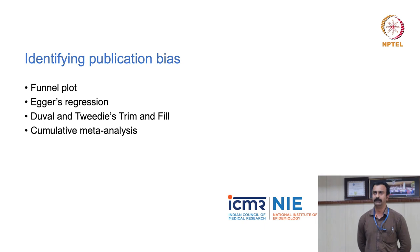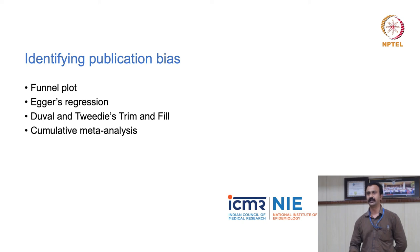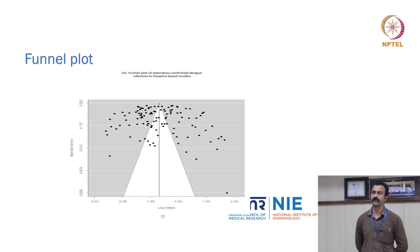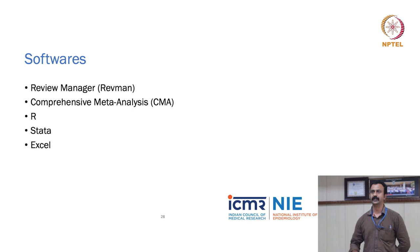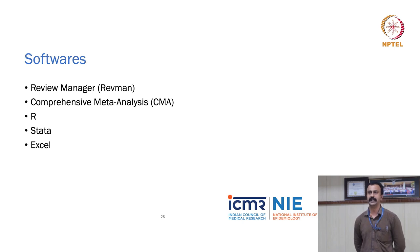Publication bias is also relevant here: for instance, if a few studies found that green tea mouthwash was not working, they would most likely not get published. Statistical approaches for assessing publication bias include funnel plot, Egger's regression, trim and fill, and cumulative meta-analysis. A funnel plot applied to the dengue systematic review shows that the spread of studies was equal across each side. Common software for data synthesis includes RevMan (free), comprehensive meta-analysis (paid), R (free), Stata (paid), and Excel with manual formulas. There is also a paper in BMC demonstrating meta-analysis using Excel.